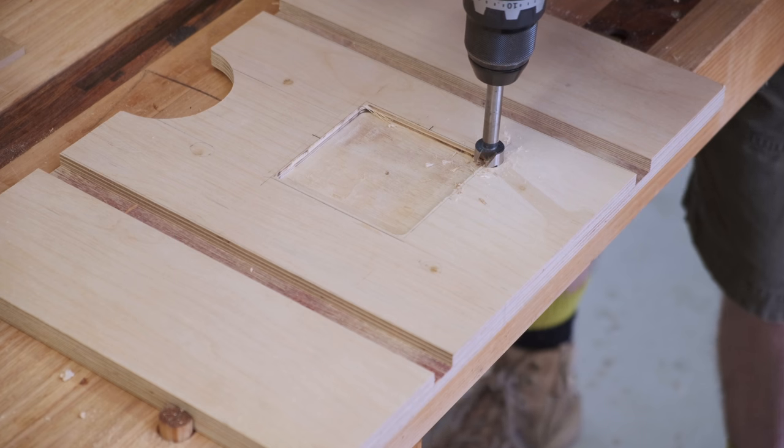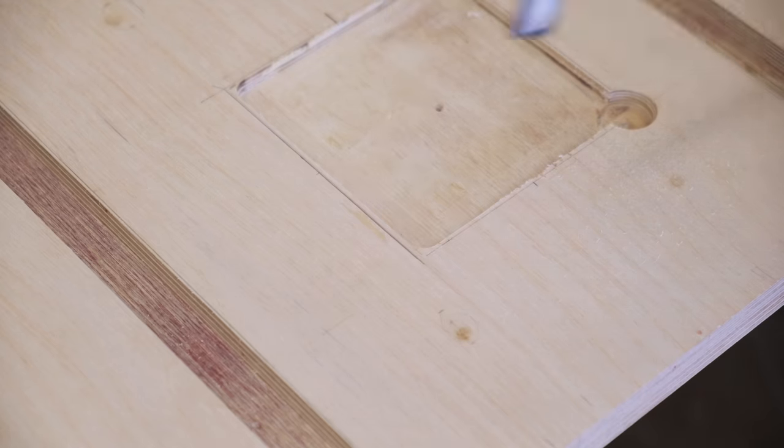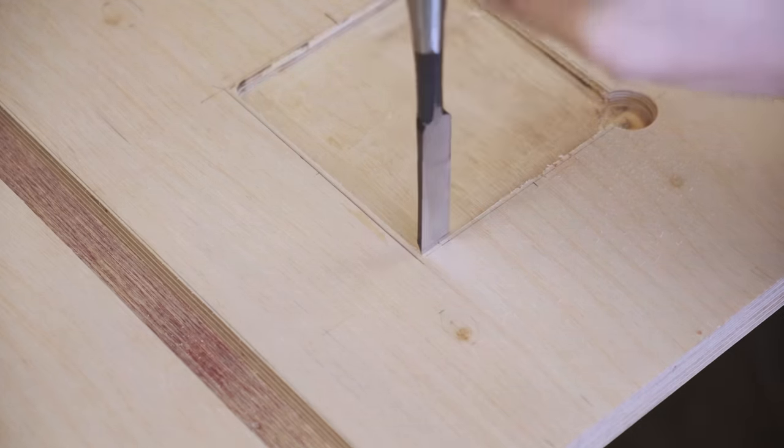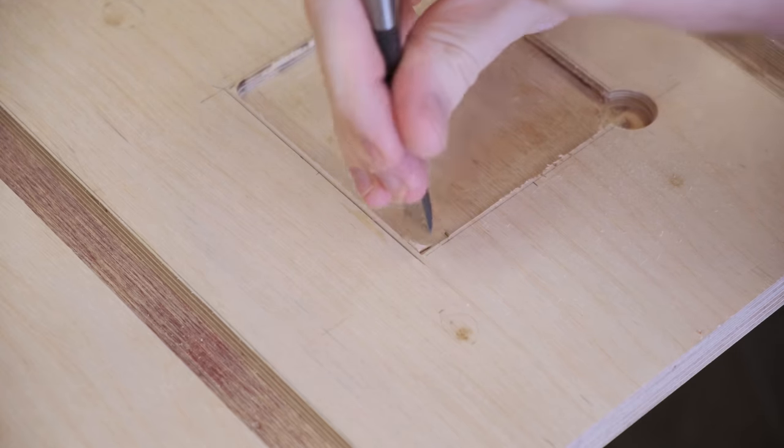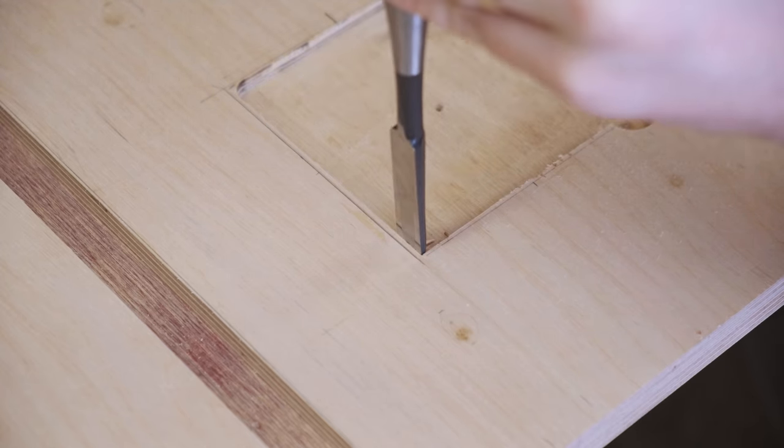In one corner, a Forstner bit is used to create a thumb hole. The other three corners get squared up with a chisel. It's either square the corners or round the corners of each and every insert.